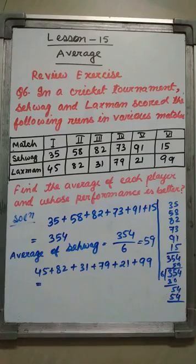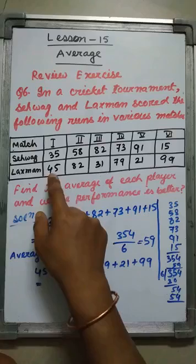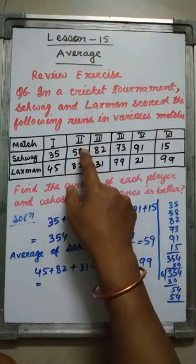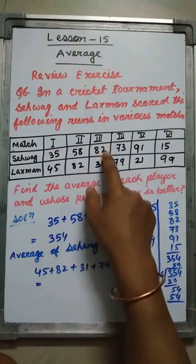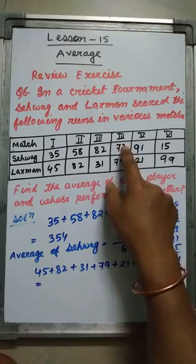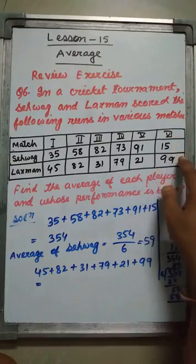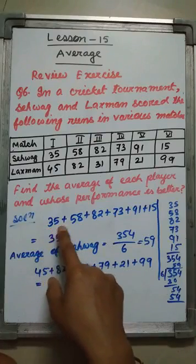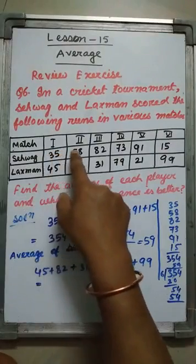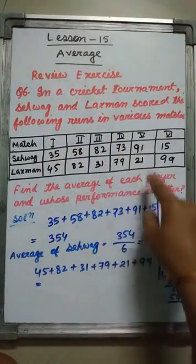From the review exercise, question number 6. In a cricket tournament, Sehwag and Laxman scored the following runs in various matches. Match 1: Sehwag 35, Laxman 45. Match 2: Sehwag 58, Laxman 82. In the fourth match, 73 and 79. In the fifth match, 91 and 21. And in the sixth match, 15 and 99. Find the average of each player and whose performance is better.